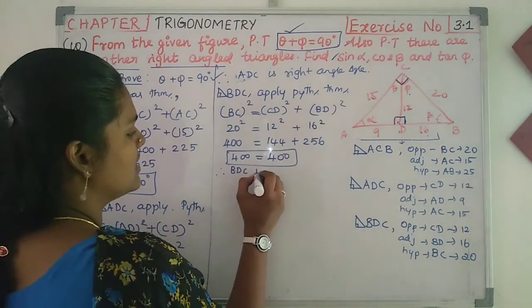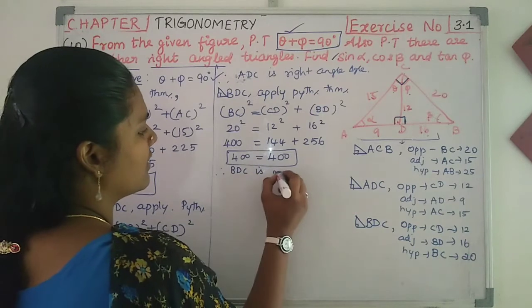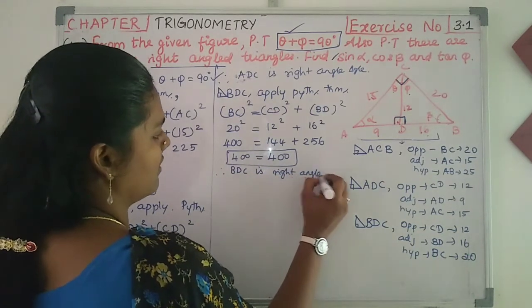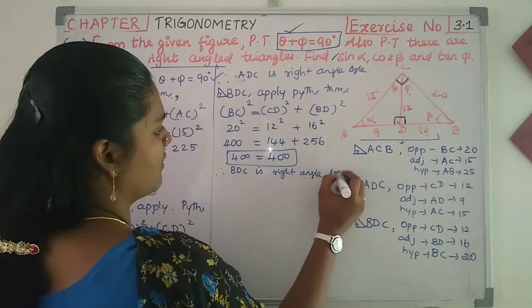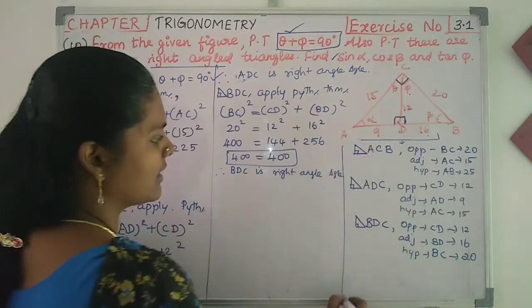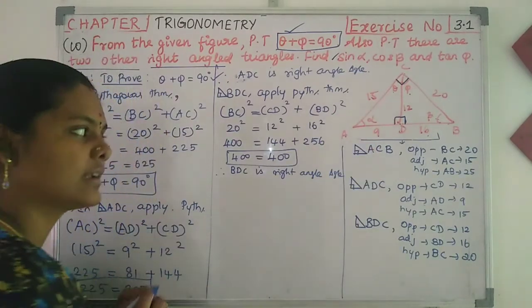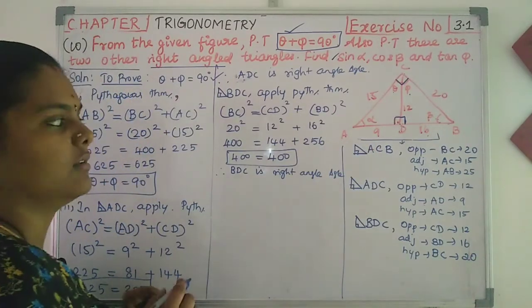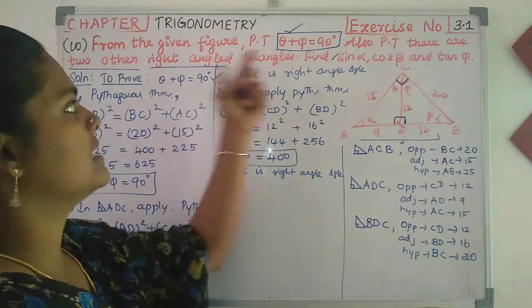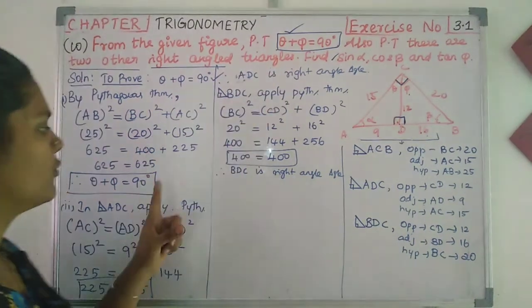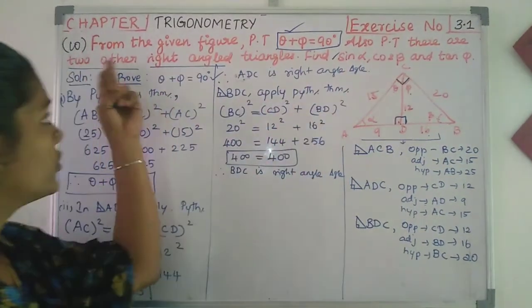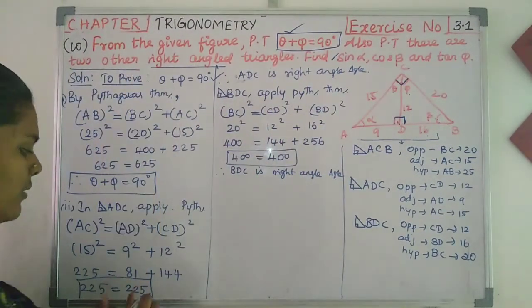So this gives 144 plus 256. There is another factor: 400 equals 144 plus 256. Now, LHS equals RHS. Therefore, BDC is a right angle triangle.